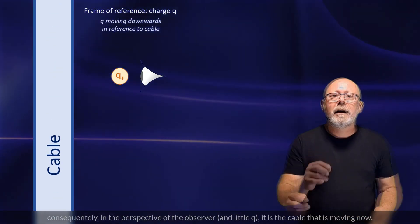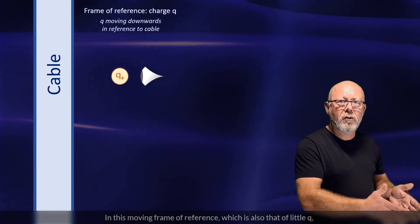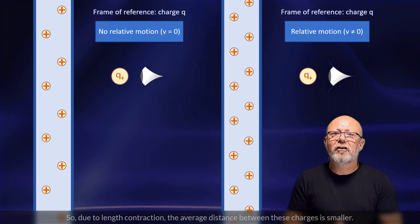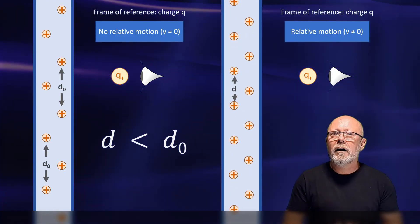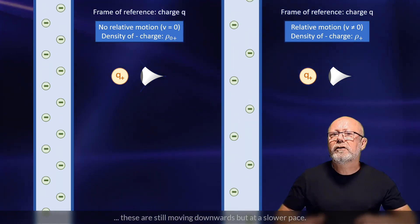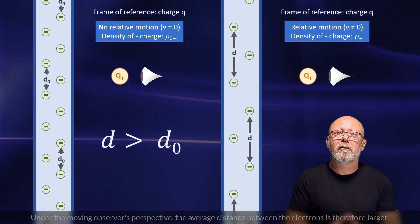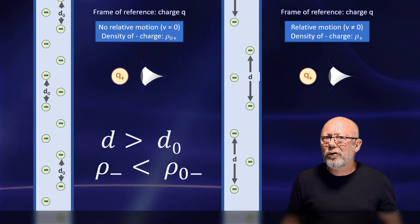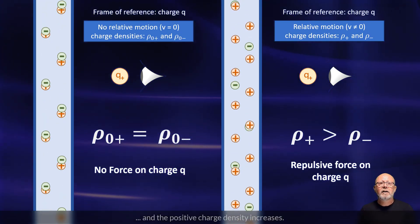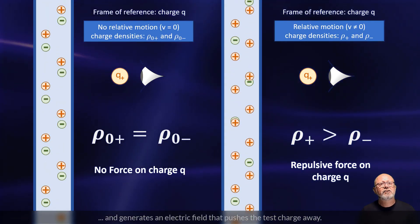Consequently, in the perspective of the observer, it is the cable that is moving now, upwards. In this moving frame of reference, which is that also of little q, the positive charges in the cable are moving upwards. So, due to length contraction, the average distance between these charges is smaller. Thus, their density increases. Regarding the negatively charged electrons, these are still moving downwards but at a slow pace. Under the moving observer's perspective, the average distance between the electrons is therefore larger. Thus, their density has decreased. To conclude, for the moving observer, the negative charge density decreases and the positive charge density increases. So, in his perspective, the cable appears positively charged and generates an electric field that pushes the test charge away.